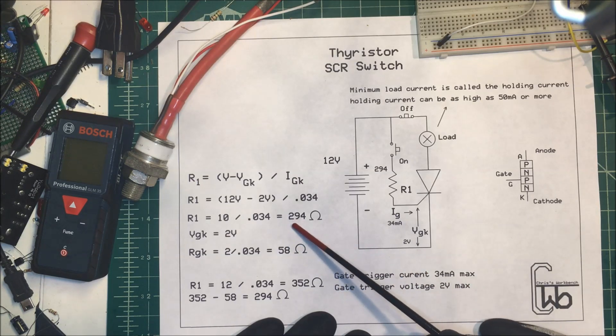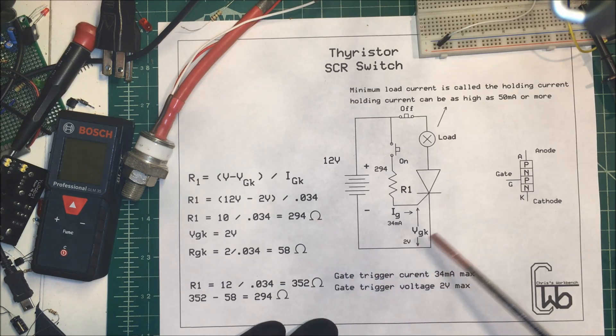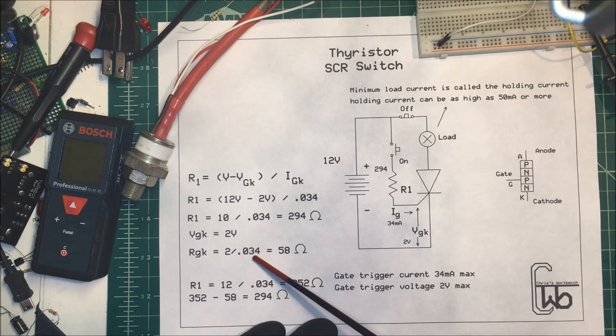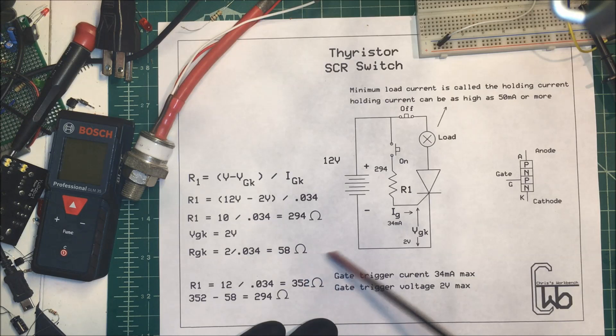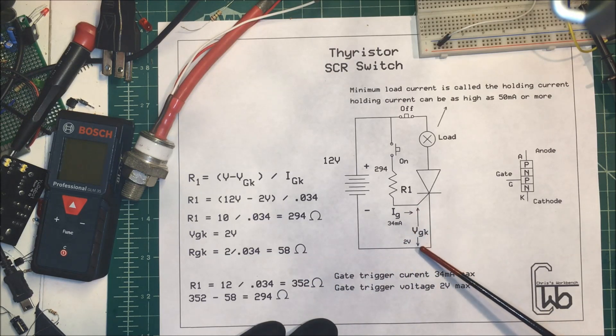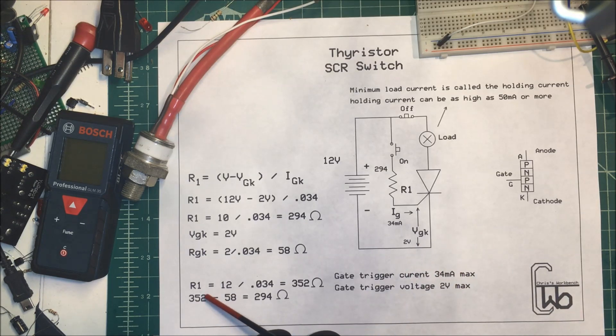Now we know that this is two volts dropped across here, and we divide that by our 34 milliamps and it gives us 58 ohms. And if we measure this with an ohmmeter we get 58 ohms here.